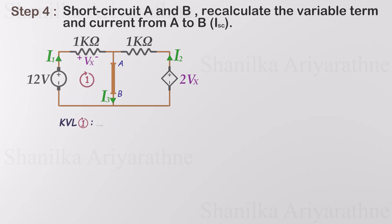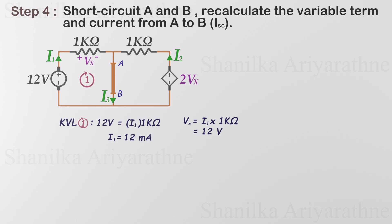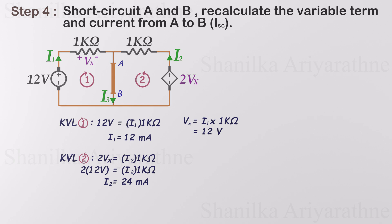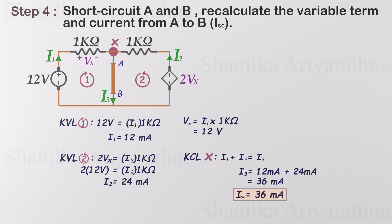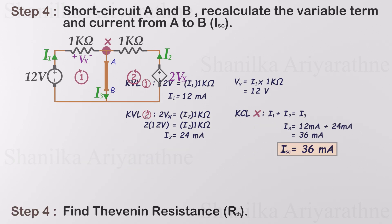Applying KVL to loop 1, which contains the resistors and the independent source, we get the current through the 1 kilohm resistor to be 12 milliamps. Using Ohm's law, the voltage across this resistor is 12 volts — this gives us Vx. Next, apply KVL to loop 2; the current I2 flowing through this loop is 24 milliamps. Applying KCL at node X, where the currents from different components meet, we find that the current I3 is 36 milliamps. This is the short circuit current flowing between terminals A and B. These recalculated values allow us to compute the Thevenin resistance.